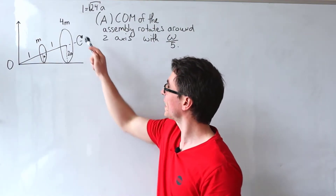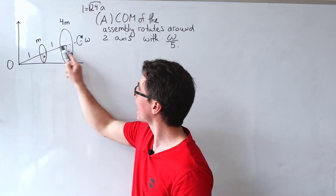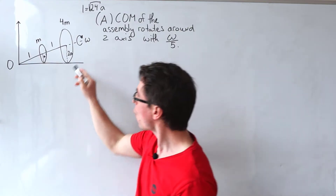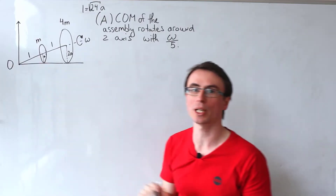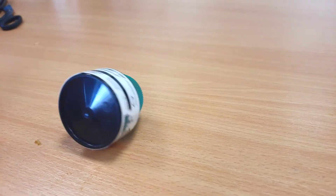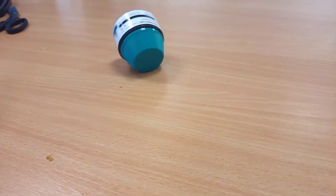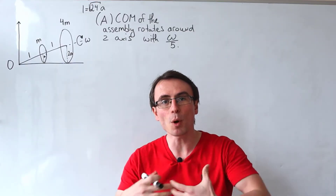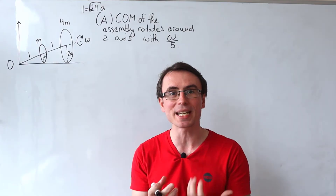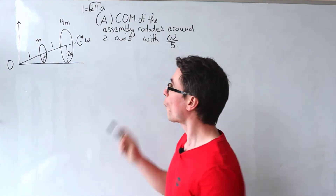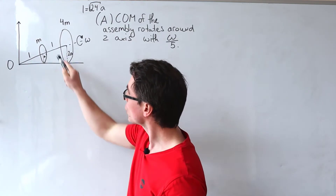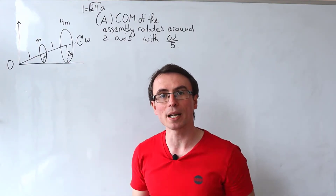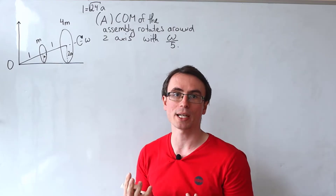Both of these disks are spinning around their own axis, but also rotating around the origin — similar to this container found in my office, used here to help visualize the problem. A really important part of this problem is that both disks are spinning without rolling. What does that mean?